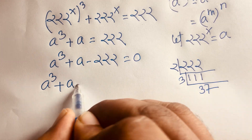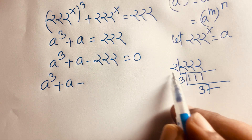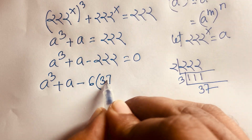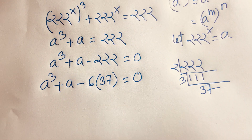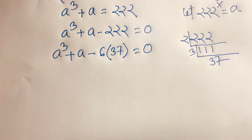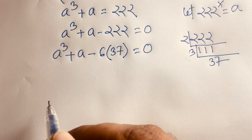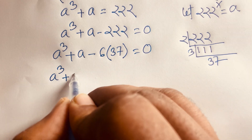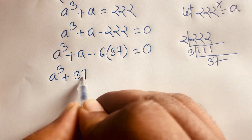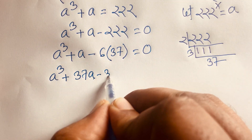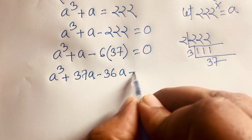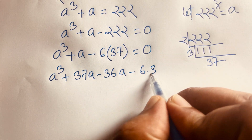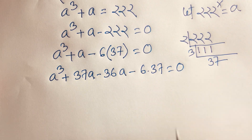Using this factorization, we rewrite the cubic as a cubed plus 37a minus 36a minus 6 times 37 equals 0. This splits the middle term to allow grouping and factoring.